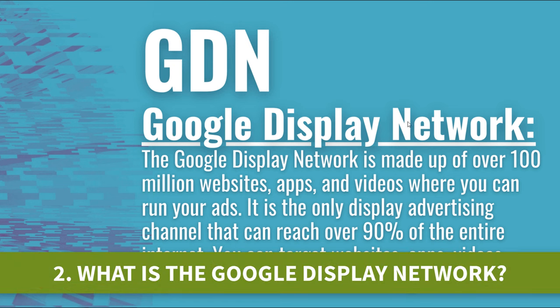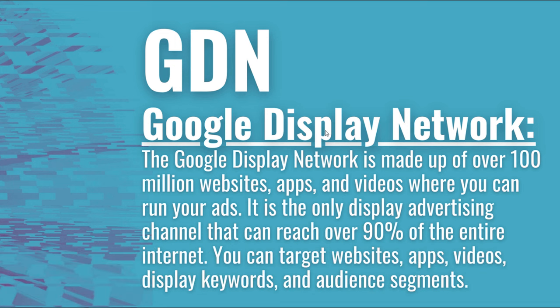Today I'm going to be going over the Google Display Network, also referred to as the GDN. The GDN is made up of over 100 million — many sources say over 200 million — websites, apps, and videos where you can run your ads. It's the only display advertising channel that can reach over 90% of the entire internet. You can target websites, apps, videos, display keywords, and audience segments, incorporating location targeting, language targeting, and more to reach your target audience.